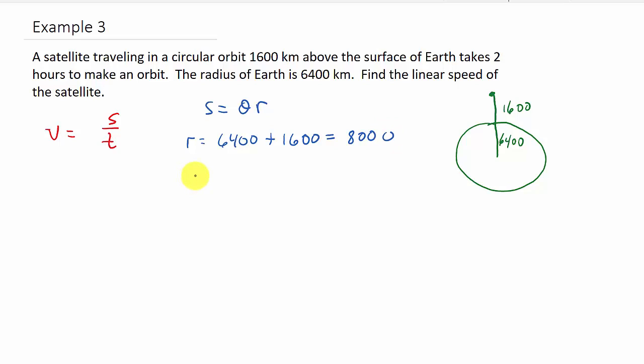Now, we need to get the angle. Alright. So theta. Well, it says it takes two hours to make an orbit. So that's one time around the Earth. So when it goes one time around the Earth, that's 360 degrees. Or, since we need theta in radians, that would be what? Two pi. And so our angle that it makes is two pi radians.